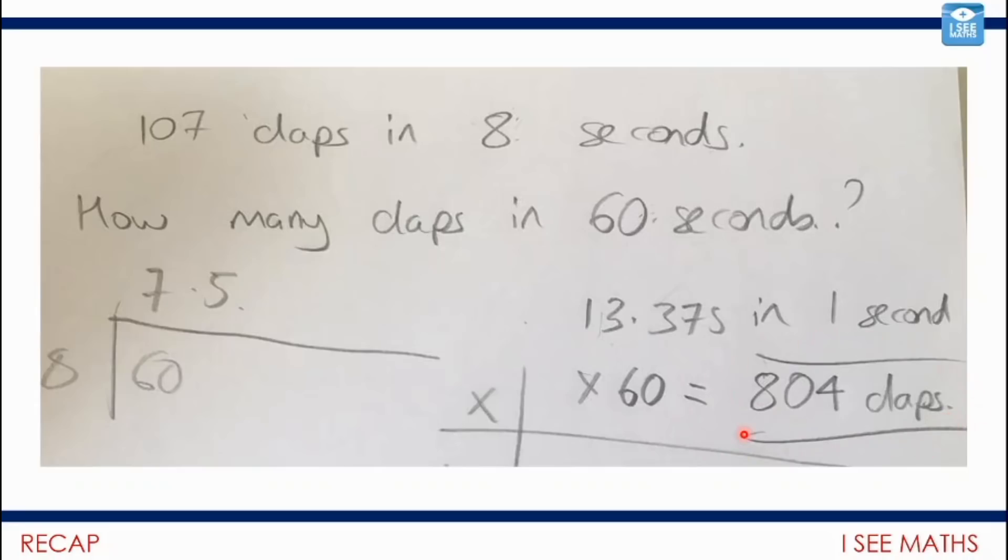Famous last words because of course I got this through. Not only did we manage to predict the 804 claps exactly, but we also had a method that I thought was interesting. Here the calculation is we've got 107 claps in eight seconds, so we've got a division which has worked out how many claps per second, an incredible 13.375 claps in a second. Now multiply that by 60 seconds and we get to 804 claps.